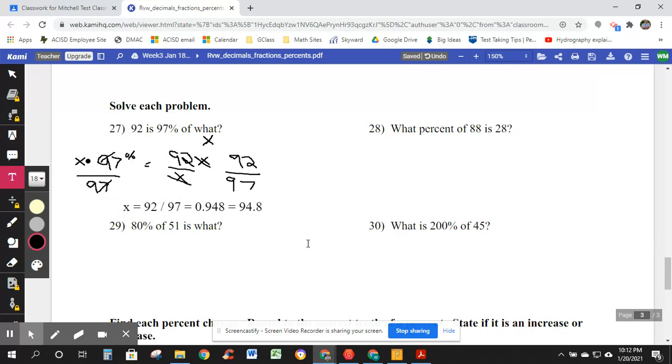They're all a little bit different in here. These are some of the hardest to think out. What is 200%? I'm looking at number 30. What is 200% of 45? What is 200% of 45? 200%.